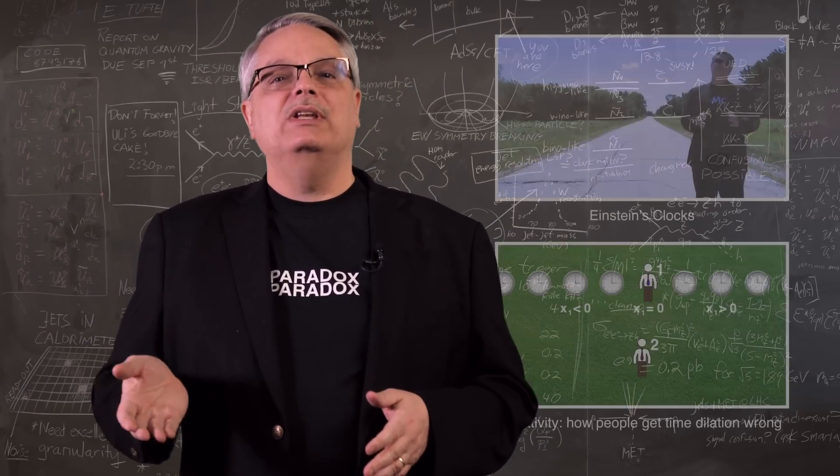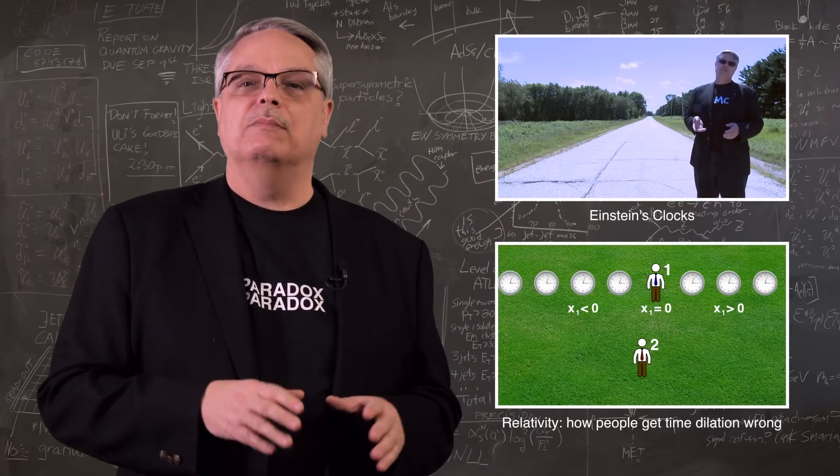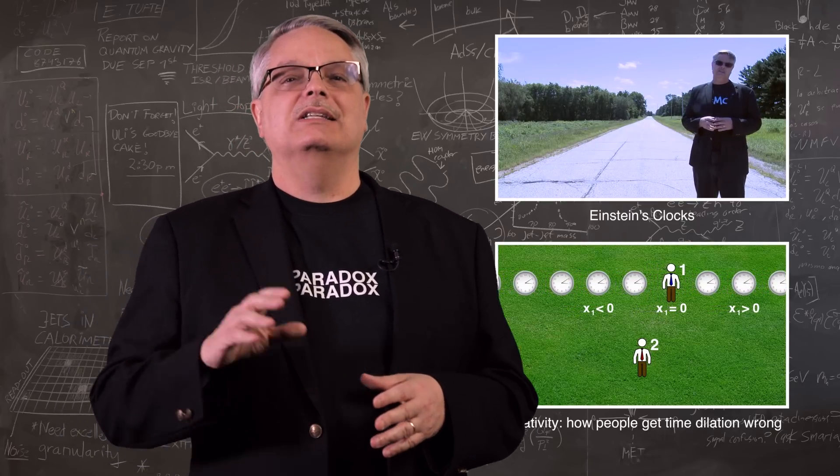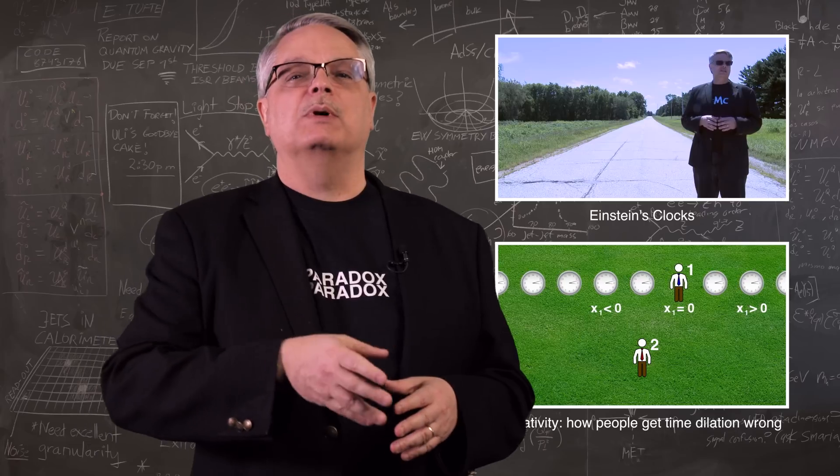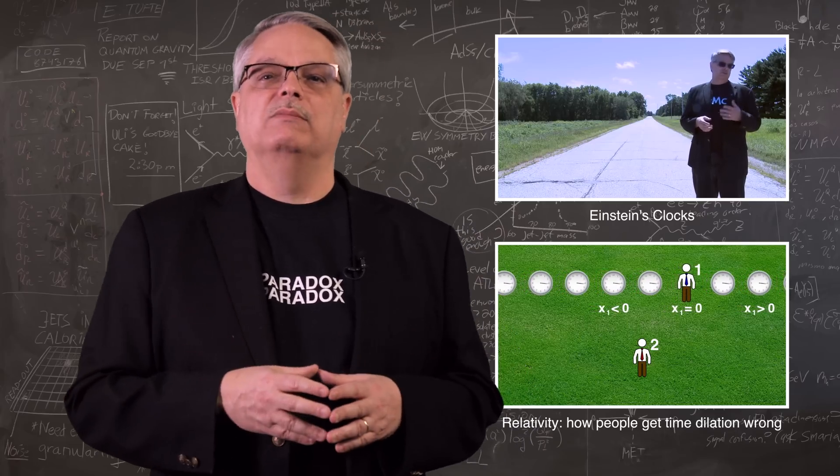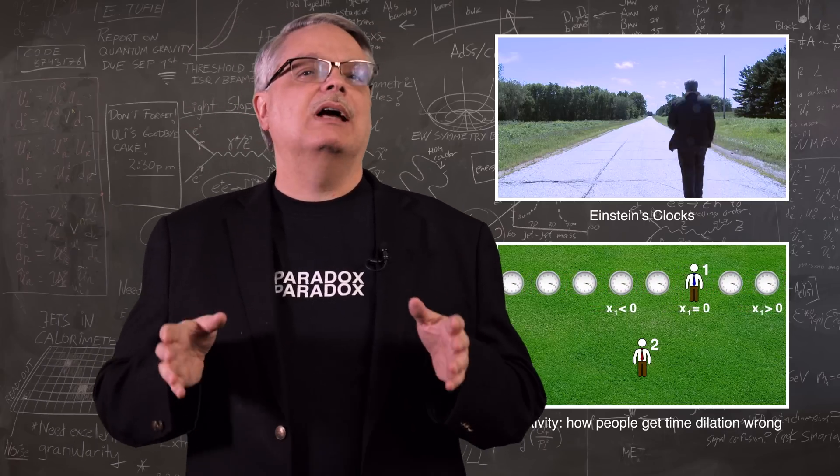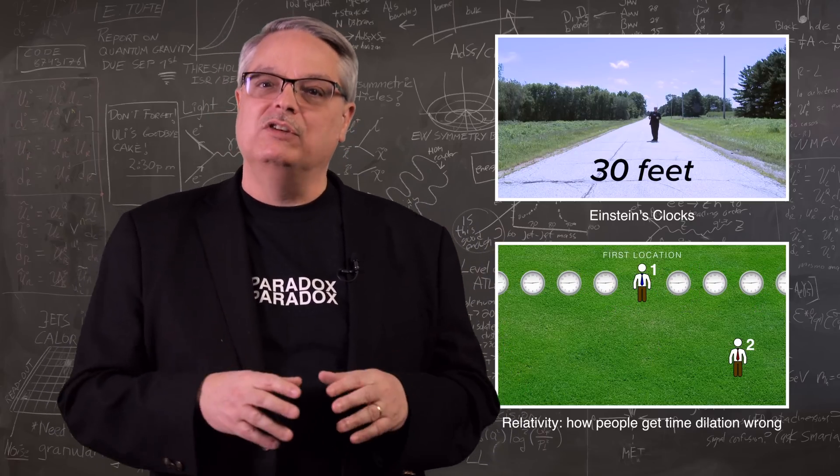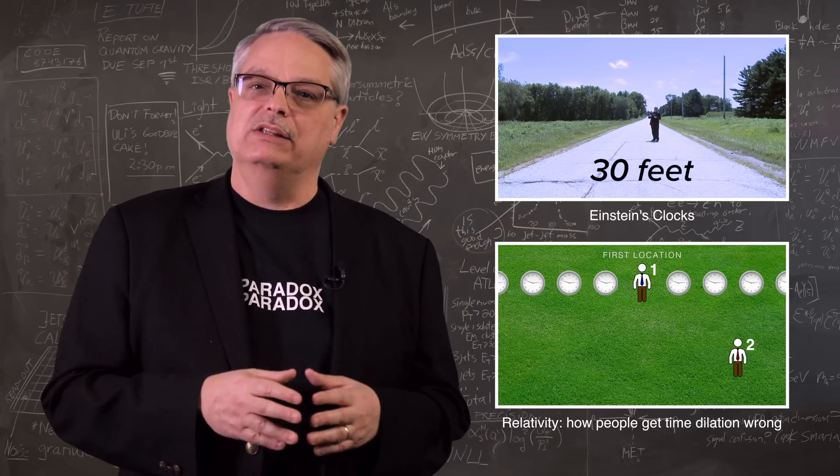Now I've made two videos about how time is viewed differently by two different observers. One is called Einstein's clock and it is the experimental proof that special relativity isn't crazy. And the other one talks about how to use time dilation properly and shows that you really have to be careful about how you use Einstein's equations.